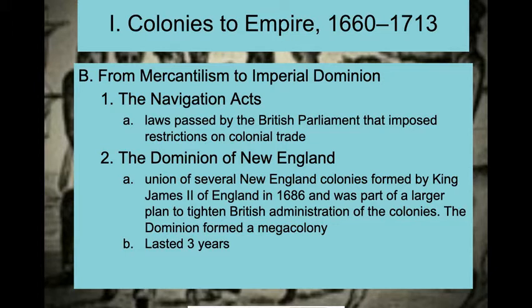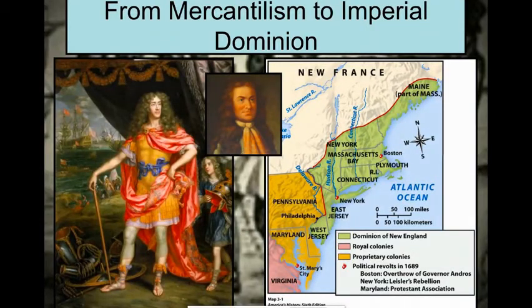The Navigation Acts are going to be passed by Parliament, and they pretty much tell the colonies you can only trade with Britain — there are no other options but Britain. This is also the time we establish the Dominion of New England, where the king comes in and unites all of these different colonies into one mega colony. It's going to last only three years because colonists by this point identified as regional — Connecticut people, Rhode Island people — and being jammed together was difficult. Plus they all had their own governments, systems, and ways of life.